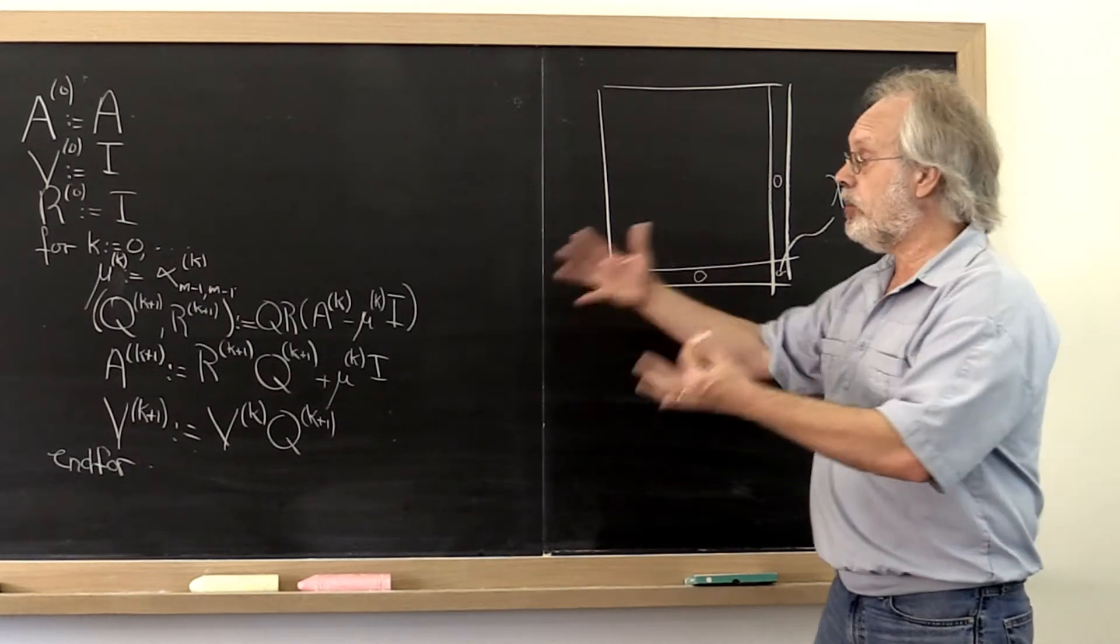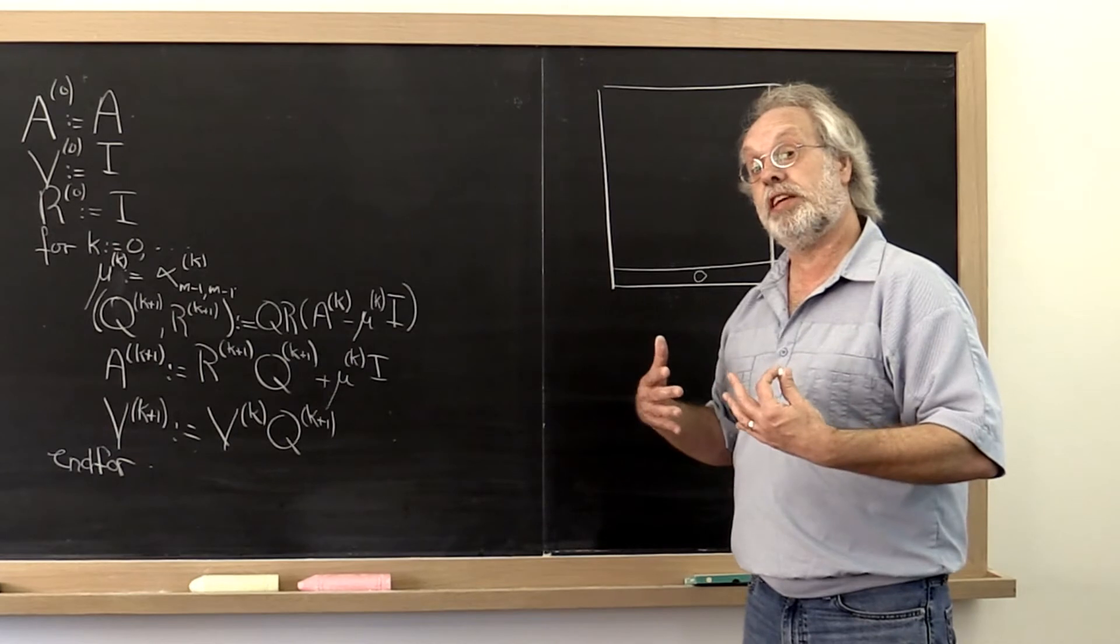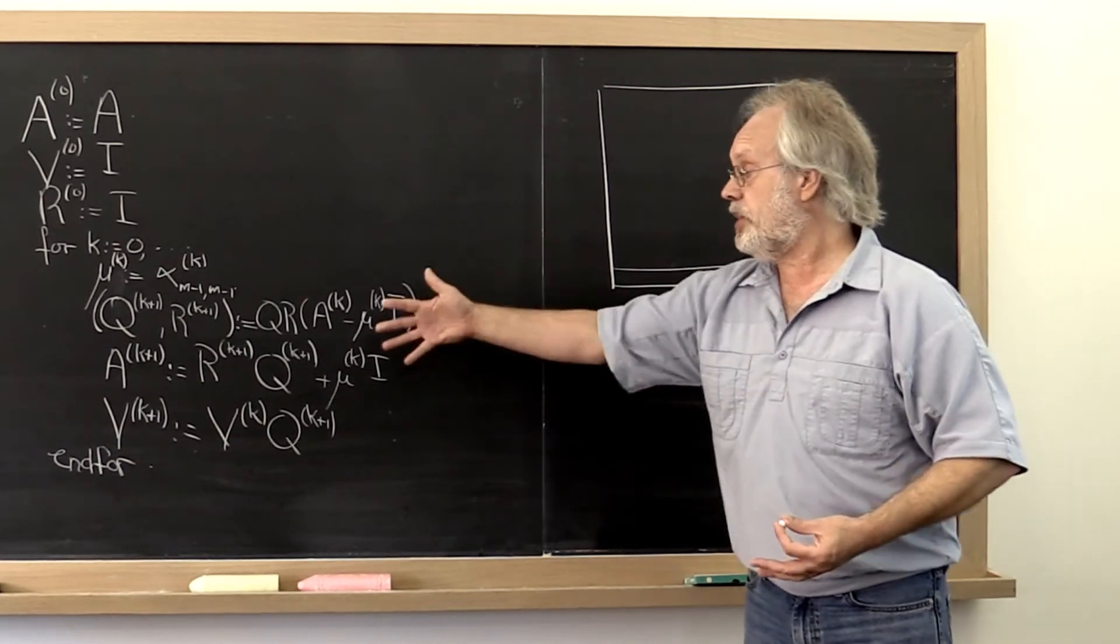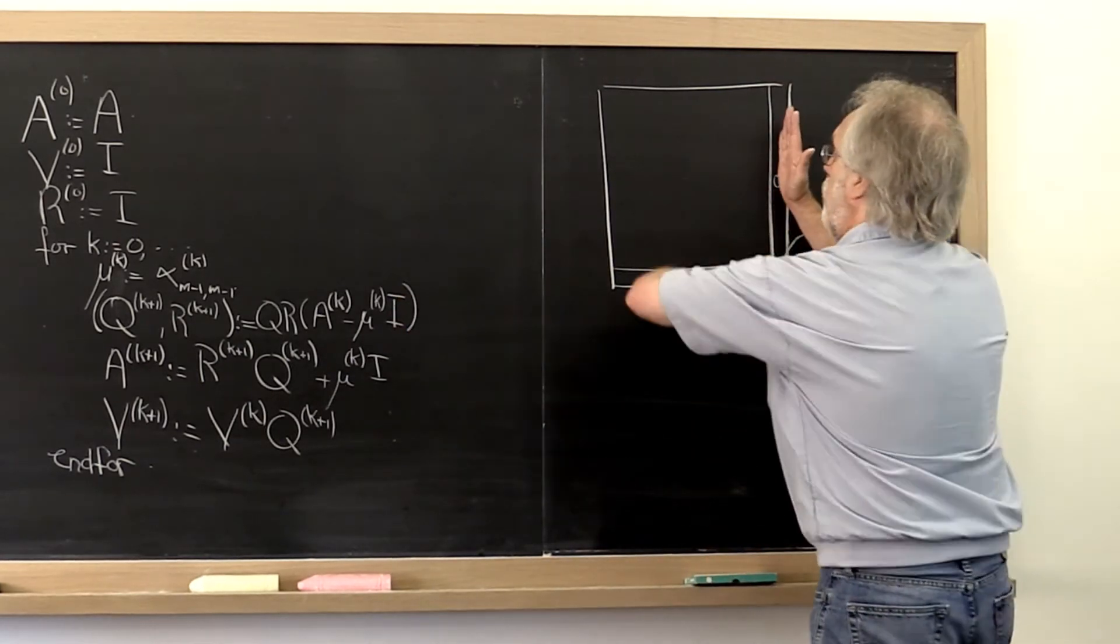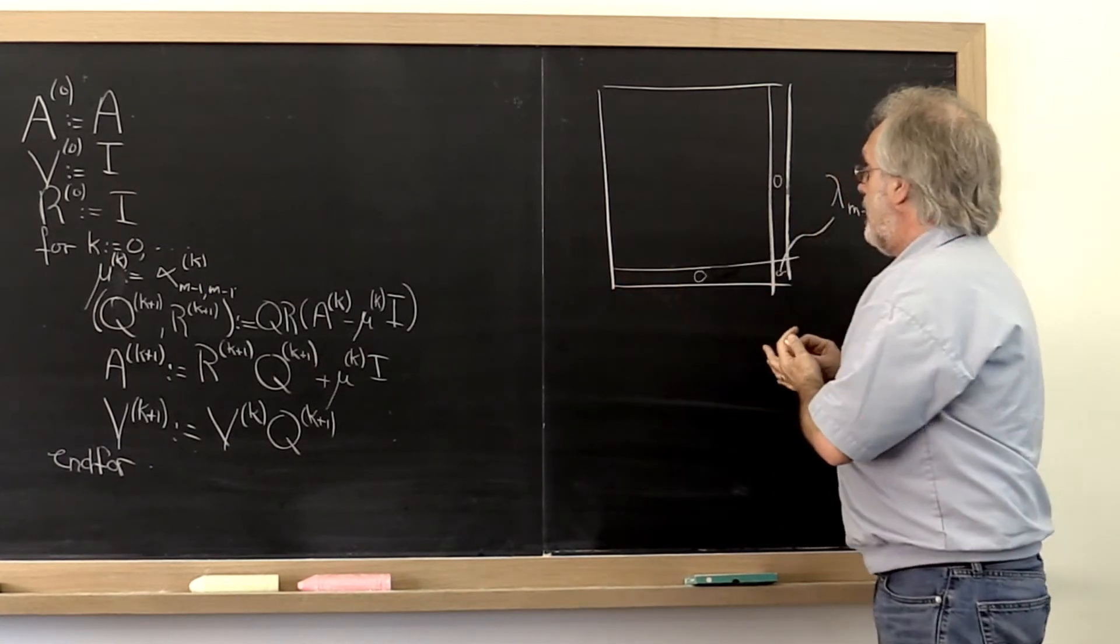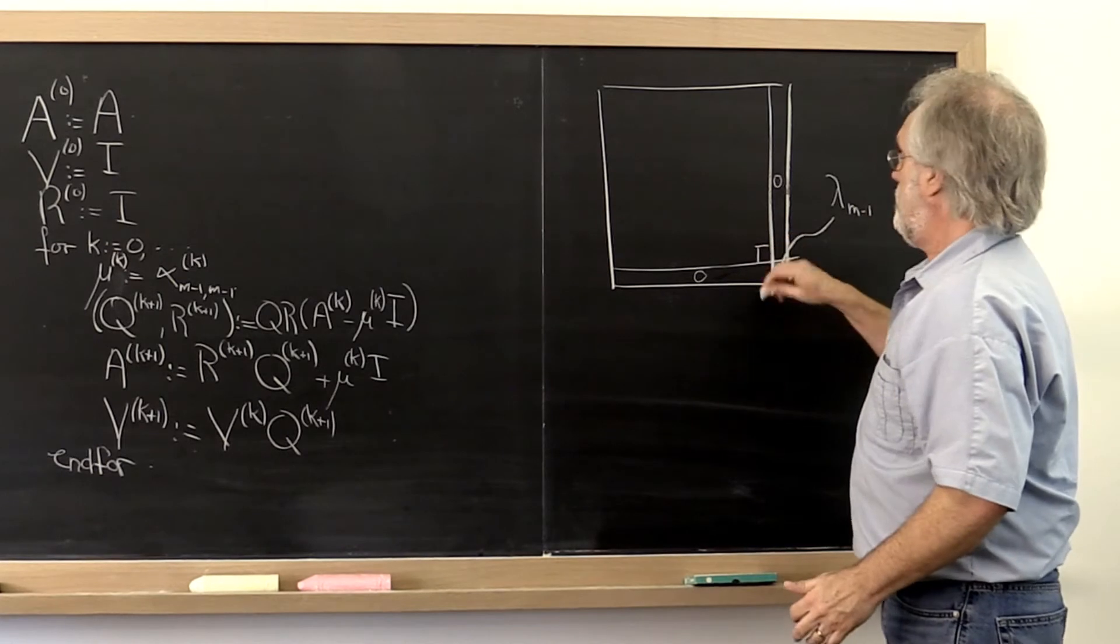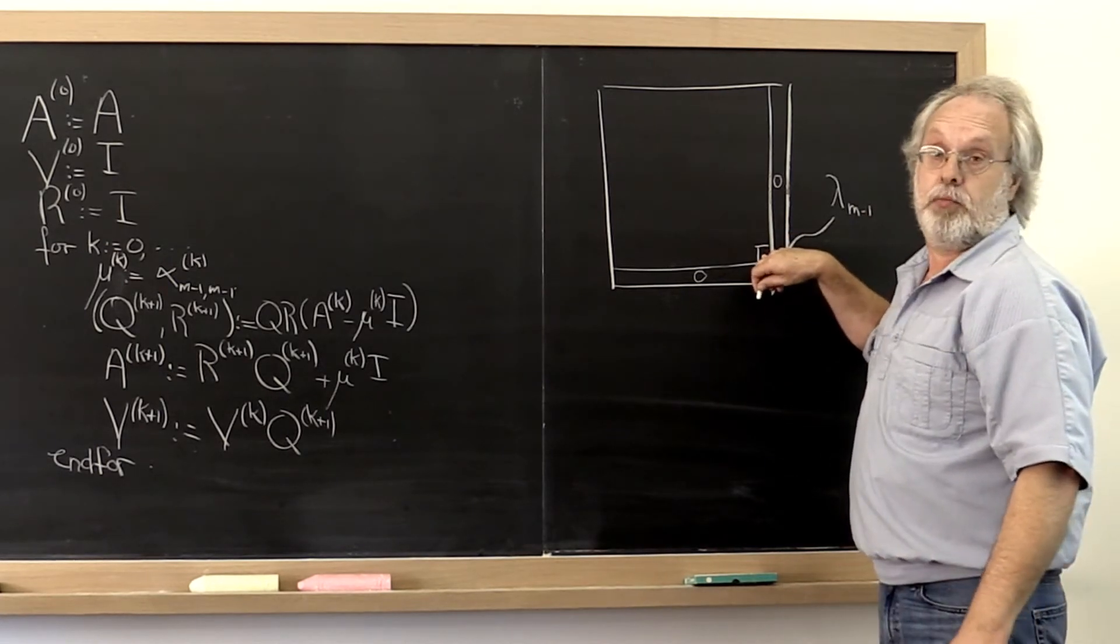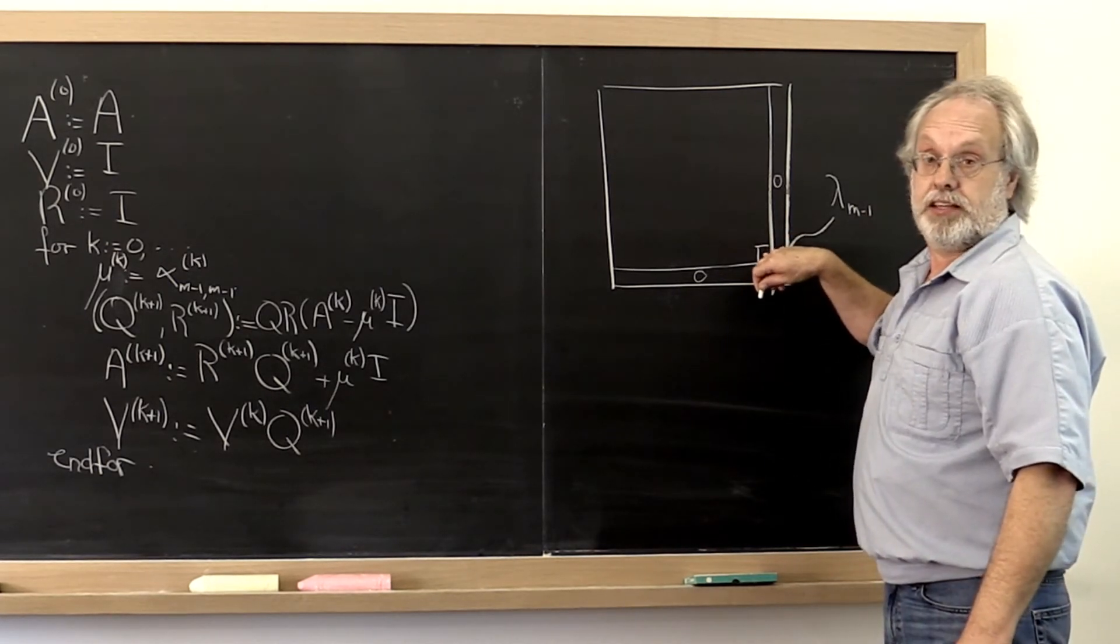And our algorithm can then what is called deflate. And we can continue our algorithm by focusing on this submatrix. And we can then pick our shift to always be the bottom right entry of that submatrix.